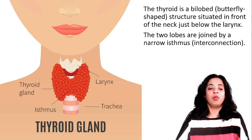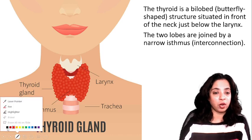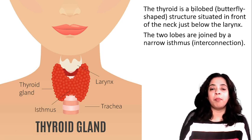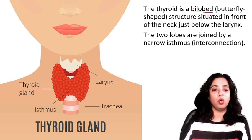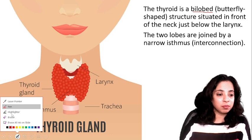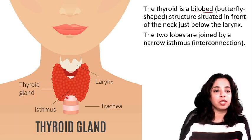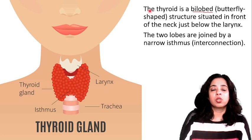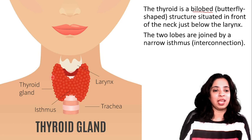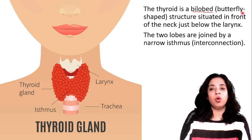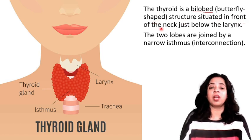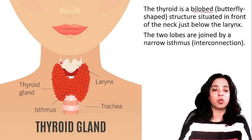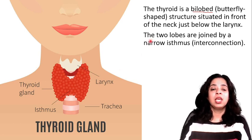First of all you should understand the anatomy of the thyroid. The thyroid is a bi-lobed — you can see here in the diagram there are two lobes. It is a bi-lobed, butterfly-shaped structure situated in front of the neck, just below the larynx. You can see the larynx here, and just below it is the thyroid gland.